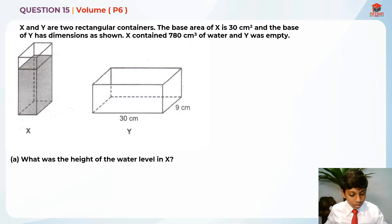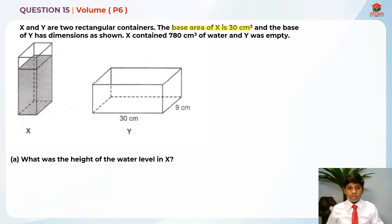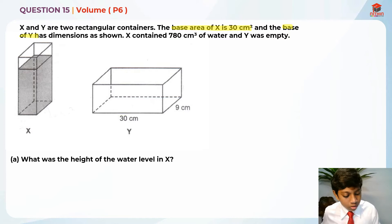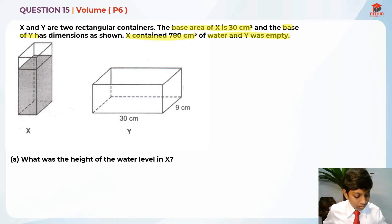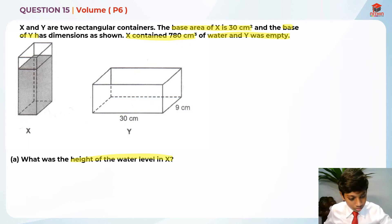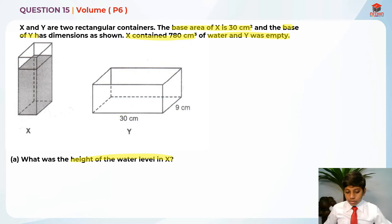Let's highlight the key information. They are both two rectangular containers. The base area of X is 30 cm squared and the base of Y has dimensions as shown. We do not know the base area of Y yet. X contains 780 cm³ of water and Y was empty. The question asks for the height of the water level in X.